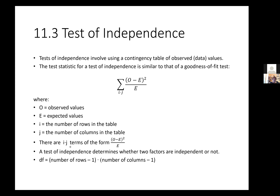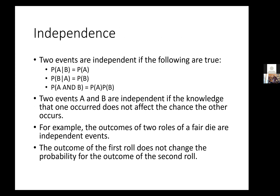The test of independence determines whether two factors are independent or not. The number of degrees of freedom for a test of independence is the number of rows in your contingency table minus one, times the number of columns minus one. So to find degrees of freedom, you multiply (number of rows − 1) times (number of columns − 1).